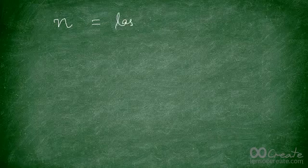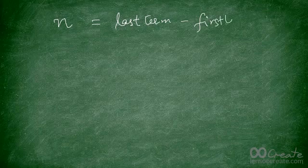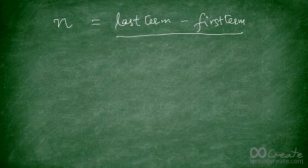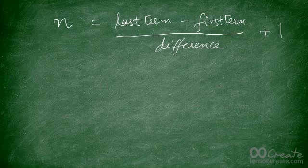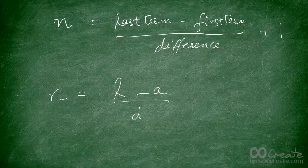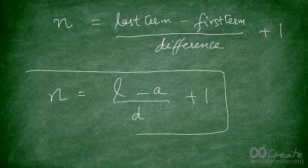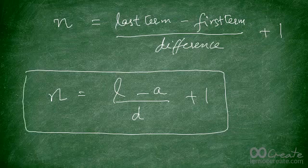I worked backwards from the nth term formula to get the position formula. The formula for finding the position n is: n = (l − a) / d + 1, where l is the value whose position you're looking for, a is the first term, and d is the common difference.